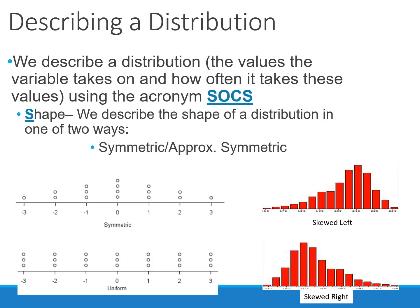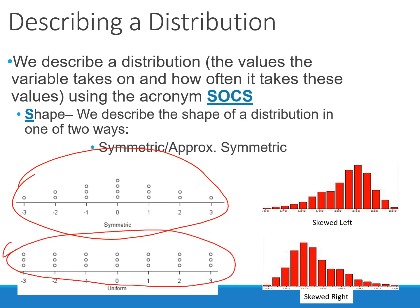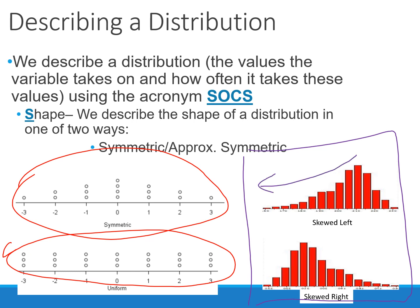When describing a quantitative distribution, we use an acronym known as SOCS — S-O-C-S. Each letter stands for a word. The first S stands for shape. We want to describe the shape of the distribution in one of two ways: symmetric or approximately symmetric, like a unimodal symmetric graph or a uniform graph, which is also symmetric. We can also say that it's skewed — skewed to the left if the tail is on the left, or skewed to the right if the tail is on the right.